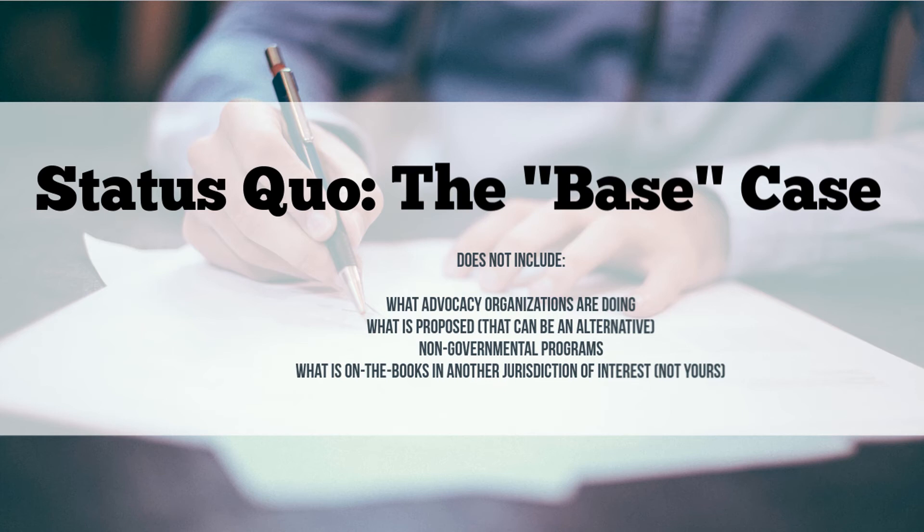The status quo does not include things that have failed to pass or that are proposed — those can be alternatives that you may eventually consider. Things that have failed to pass will be noted in your policy history, but your status quo would be nothing on the books if there's nothing currently. Things that have been proposed may be an alternative you may consider, but they are also not under the status quo.